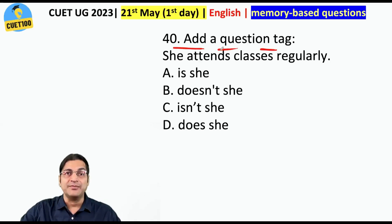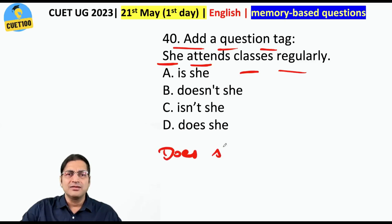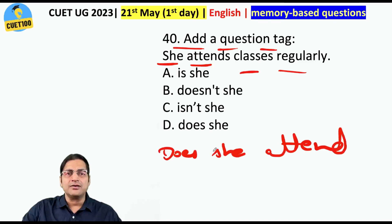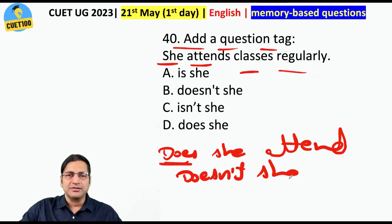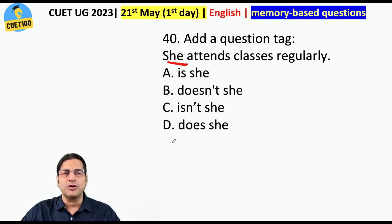Add a question tag. 'She attends classes regularly.' Try to convert it to interrogative: 'Does she attend classes regularly?' To add a question tag, if it is 'does,' change it to 'doesn't.' So the answer is 'doesn't she?' Had it been 'she does not attend classes regularly,' then the question tag would be 'does she?' The rule: if there is no negative, you put one in the tag; if there is a negative, you do not put one.